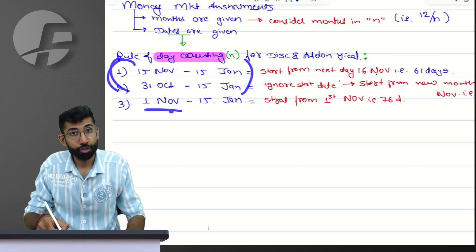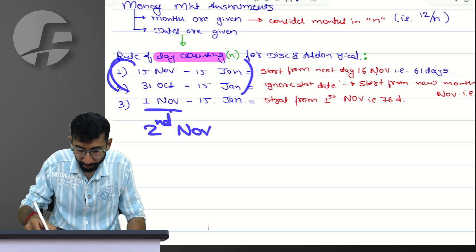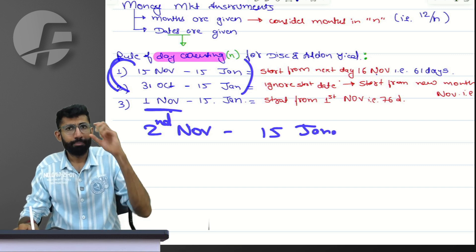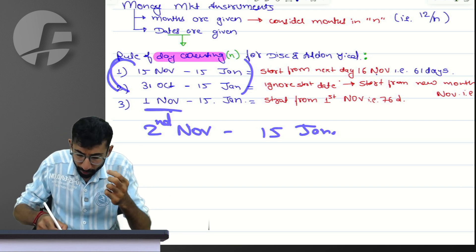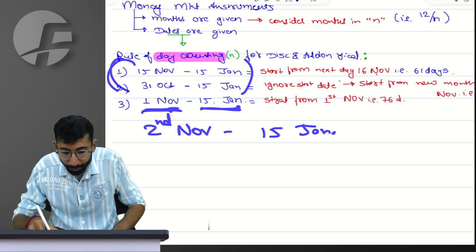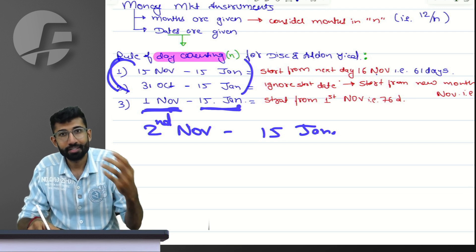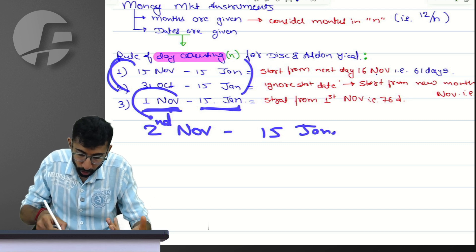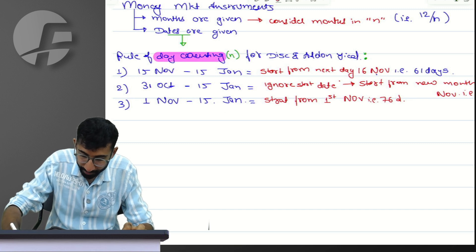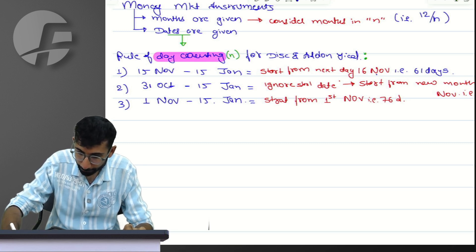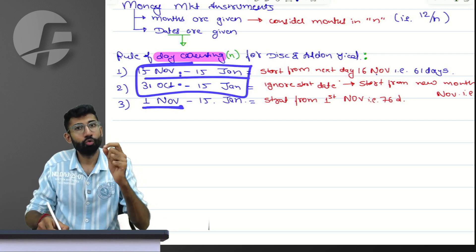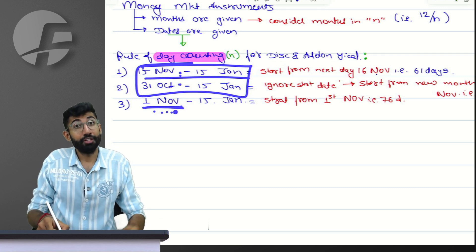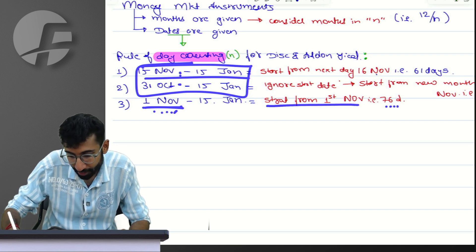If my calculation starts from 1st November to 15th January, applying the rule you have learned, you would ideally start from 2nd November. But the institute does something different here, and I need to share those rules with you. Do you feel that 1st November gives you a feeling like the start of the month? When it is 1st November, you will always have to remember that you should do your calculation including even 1st November. So you start from 1st November and it is again 76 days.